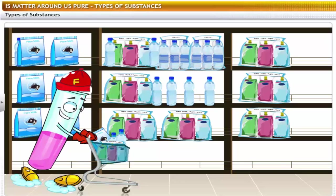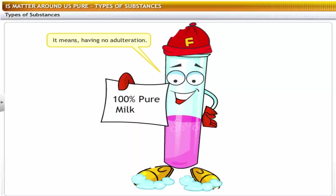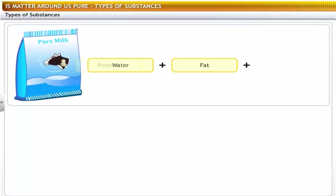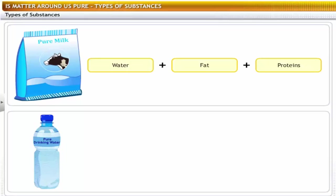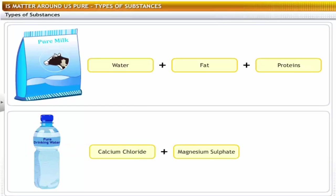You might have observed the word pure written on the packing of consumables like milk, mineral water, fruit juice, etc. What does the word pure mean to you? It means having no adulteration. That's right, but for a chemist, none of these substances are pure. For example, milk is a mixture of water, fat and proteins. Mineral water according to the label has calcium chloride, magnesium sulfate, and sodium sulfate. If it were really pure water in the scientific meaning of the word, it should contain only water molecules.